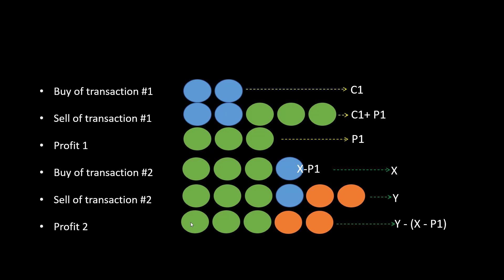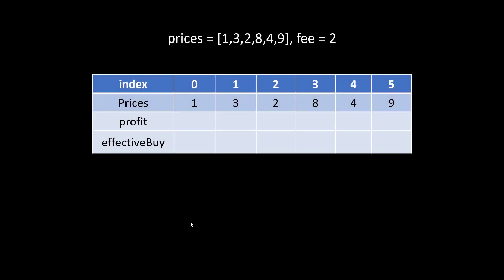Now let's dry run this approach on the first example from the question. We have a table with the index, the price for that day, and two other variables: profit and effective buy price. Initially the profit is zero and the effective buy price is the price of buying the stock, since everything you give is from your own pocket. So for this example the buy price becomes 1 initially.